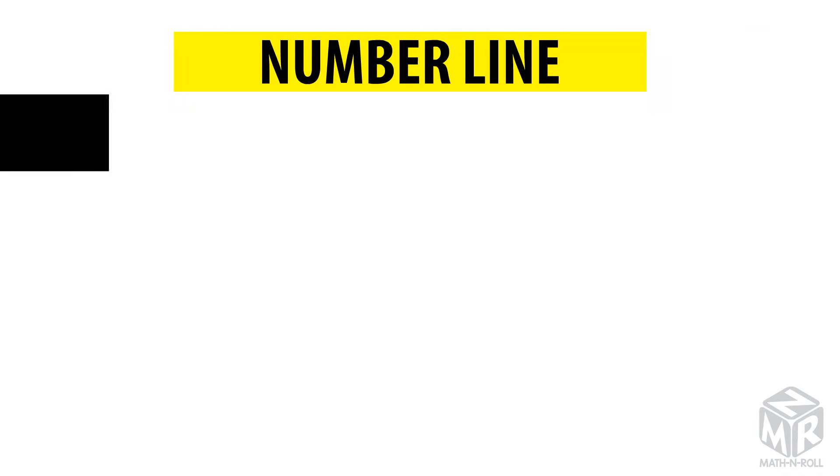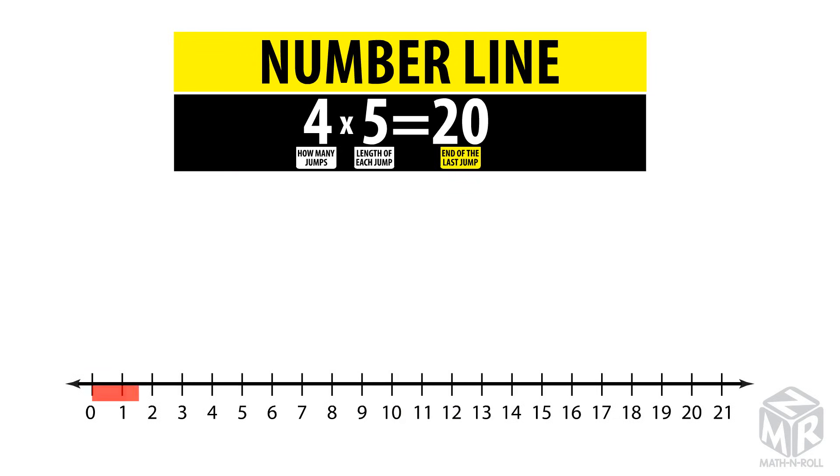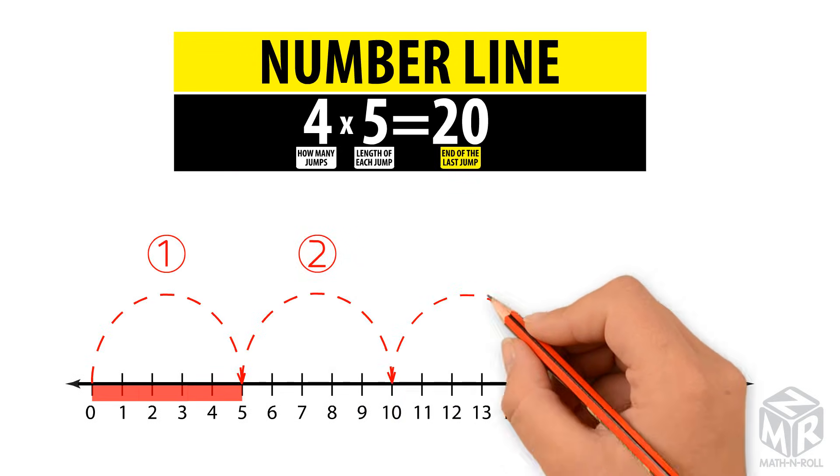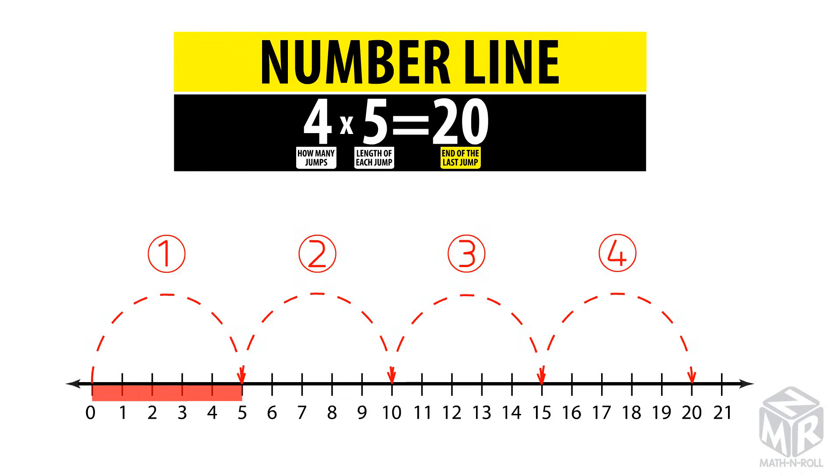Let's use the number line. We count by fives and make four jumps starting from zero. The last arrow ends at 20. So four times five equals 20.